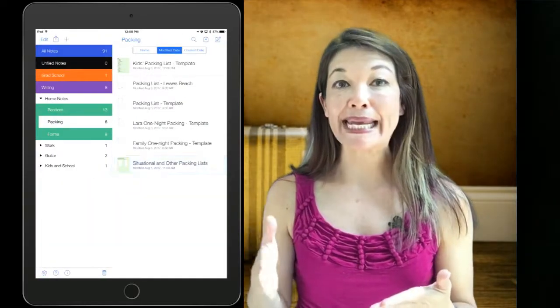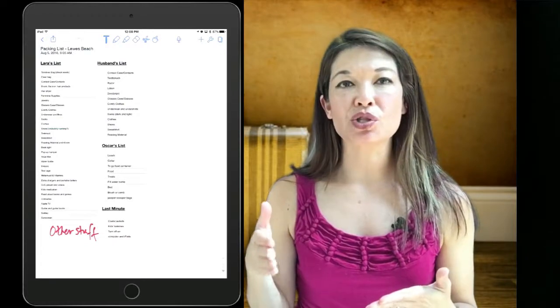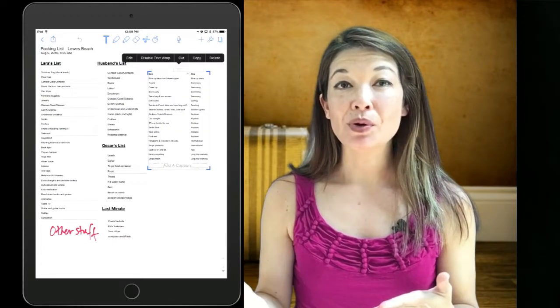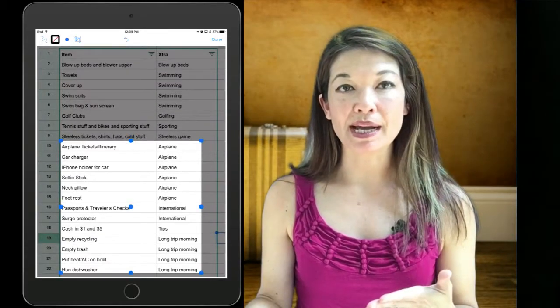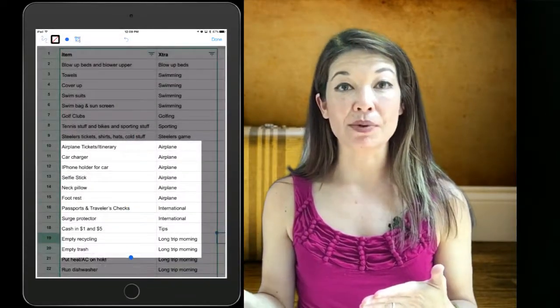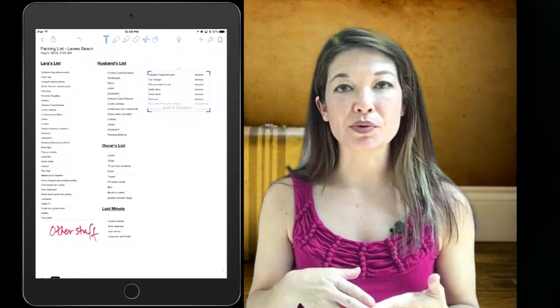So now I can choose to edit it and to crop it so that it only shows the parts that apply to my trip, which should be airplane and international travel. If several portions of the list apply, I can make another copy and crop it, or I can just use the whole list and mark off the parts that I don't need.